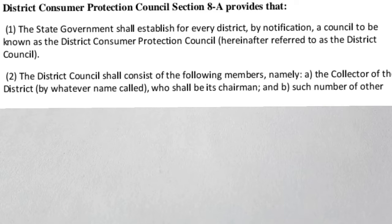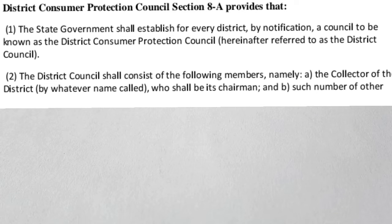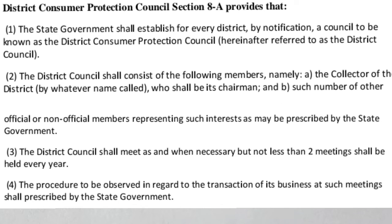The state government shall establish, for every district by notification, a council to be known as the District Consumer Protection Council. The district council shall consist of the following members: number one, the collector of the district, who shall be its chairman; and such number of other official or non-official members representing such interests as may be prescribed by the state government.